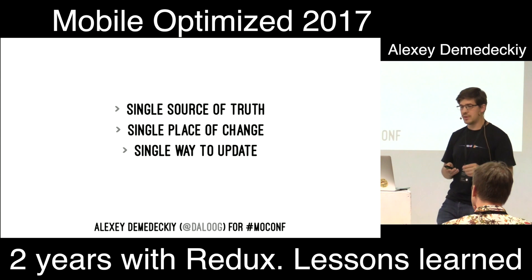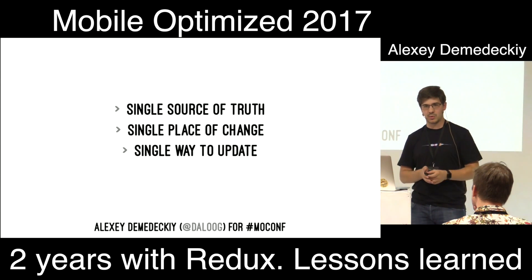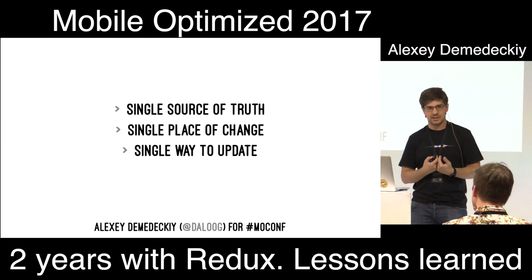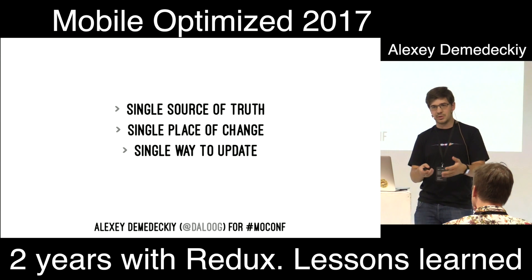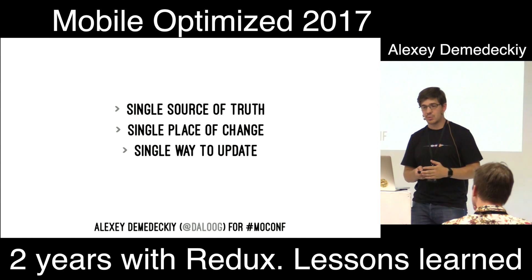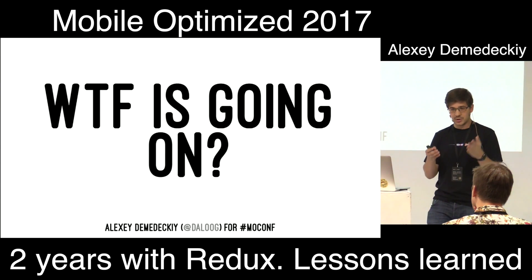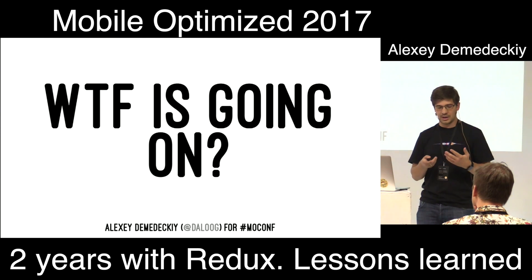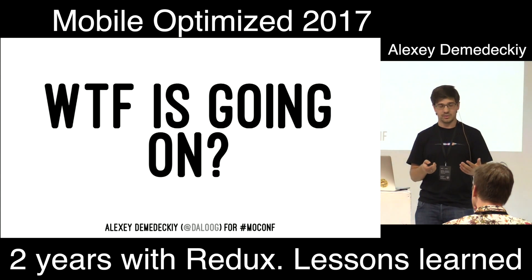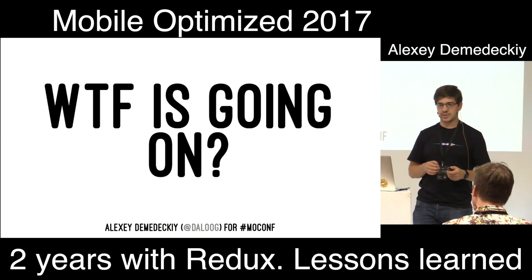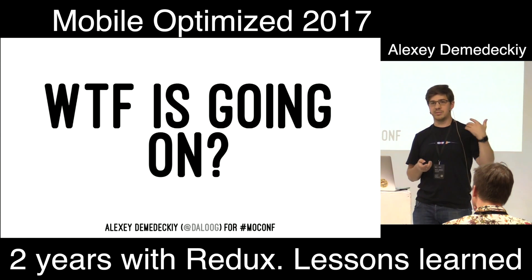These approaches are focused on answering one very important question: what is going on? Why did my application end up in this state? Why is this button visible to me? What series of events occurred that we can see this? These questions are the most time-consuming — I believe the most important questions — because until you can answer them, you cannot fix the code. I call them debug questions, because you often ask them during debug sessions.